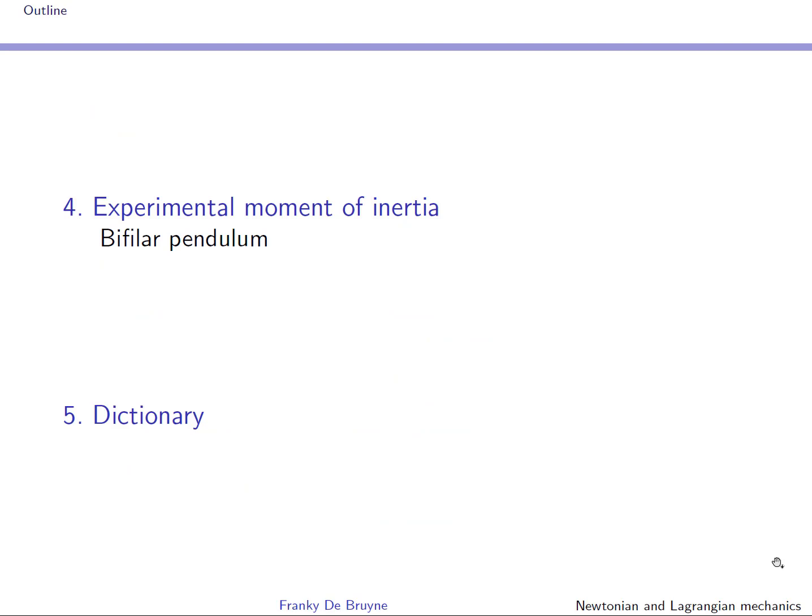The fourth and fifth sections will not be covered in the presentation. Section four covers the bifiler pendulum. A model of the bifiler pendulum is obtained using Lagrange's method, so it's kind of an exercise if you're interested. It is shown how a bifiler pendulum can be used to determine the moment of inertia of a rigid body, which might come in handy if you have an application where you have to determine this moment of inertia. Section five is a dictionary, English-French, which is meant to help you with the understanding.